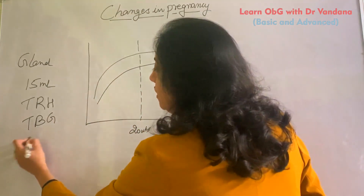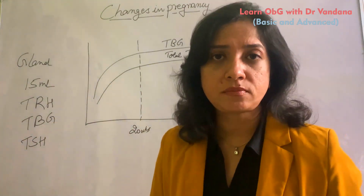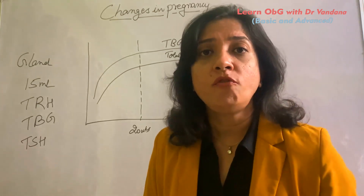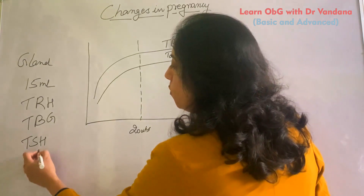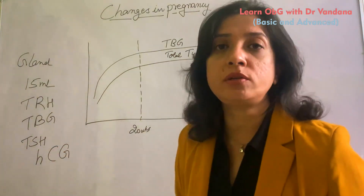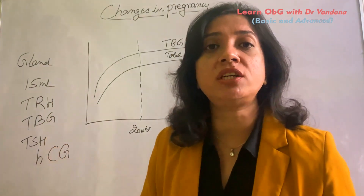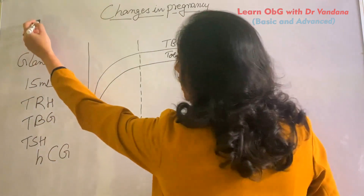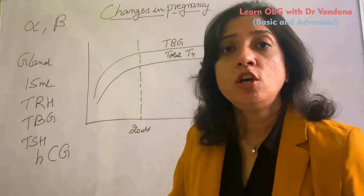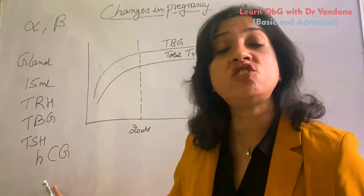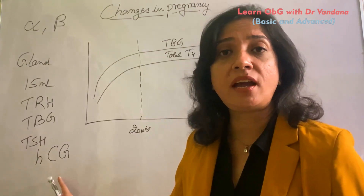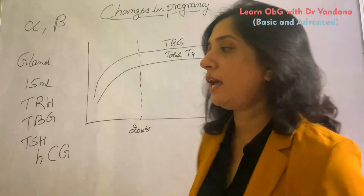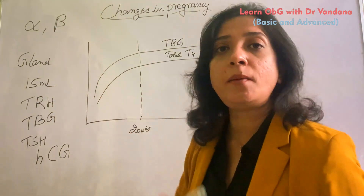What is most important to understand is the correlation between TSH and pregnancy. When the zygote implants inside the uterus, the corpus luteum in the ovary starts to produce HCG — human chorionic gonadotropin. The structure of TSH and HCG is quite similar; both are glycoproteins with two parts — an alpha subunit and a beta subunit. The alpha subunits of TSH and HCG are the same; only their beta chains are different.